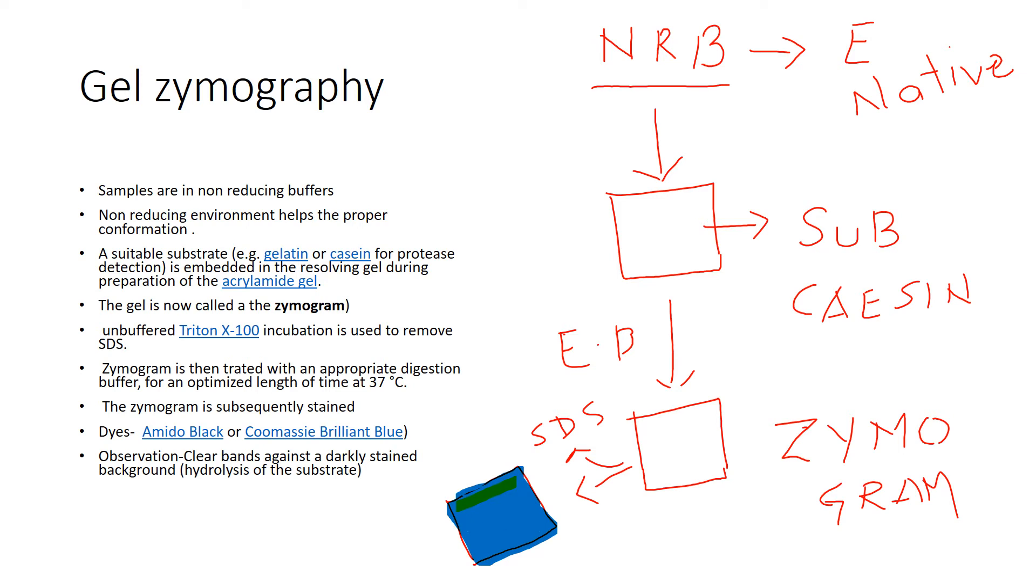After staining, you will get a colorless band. This colorless band indicates the position of the protein in your given sample where it is showing the activity of protease, the enzyme which you want to detect. This is a simple demonstration of zymography with different modifications in normal polyacrylamide gel electrophoresis for detection of protease.